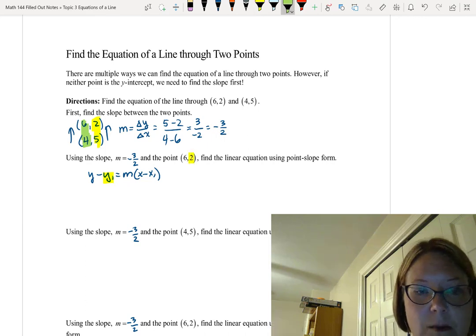We're going to replace the value of y1 with 2, the second part of that coordinate point, and we're going to replace the value of x1 with 6, the first value of that coordinate point, and finally we'll replace the slope m with negative 3 halves. We have then y minus 2 equals negative 3 halves times (x minus 6).